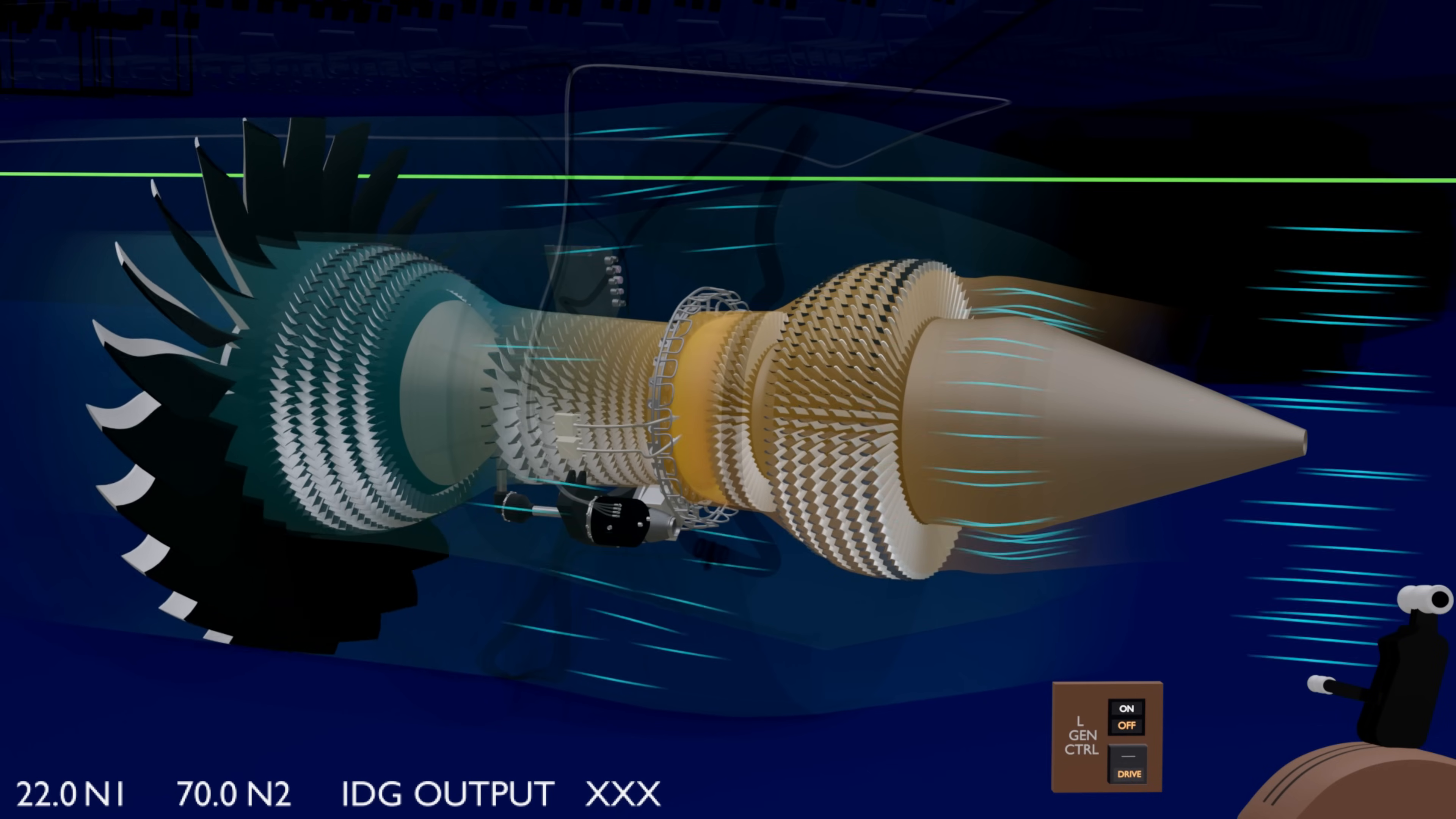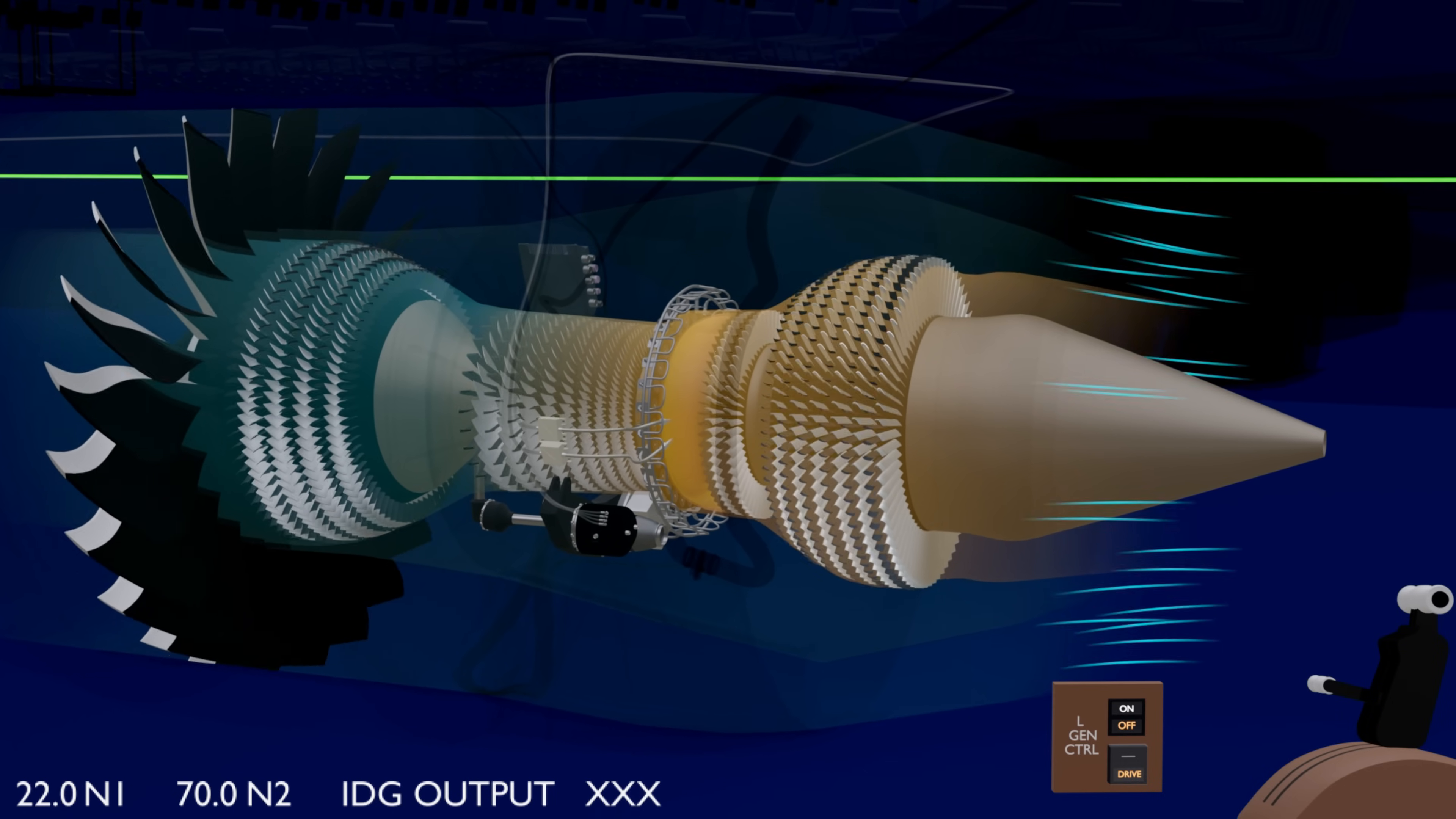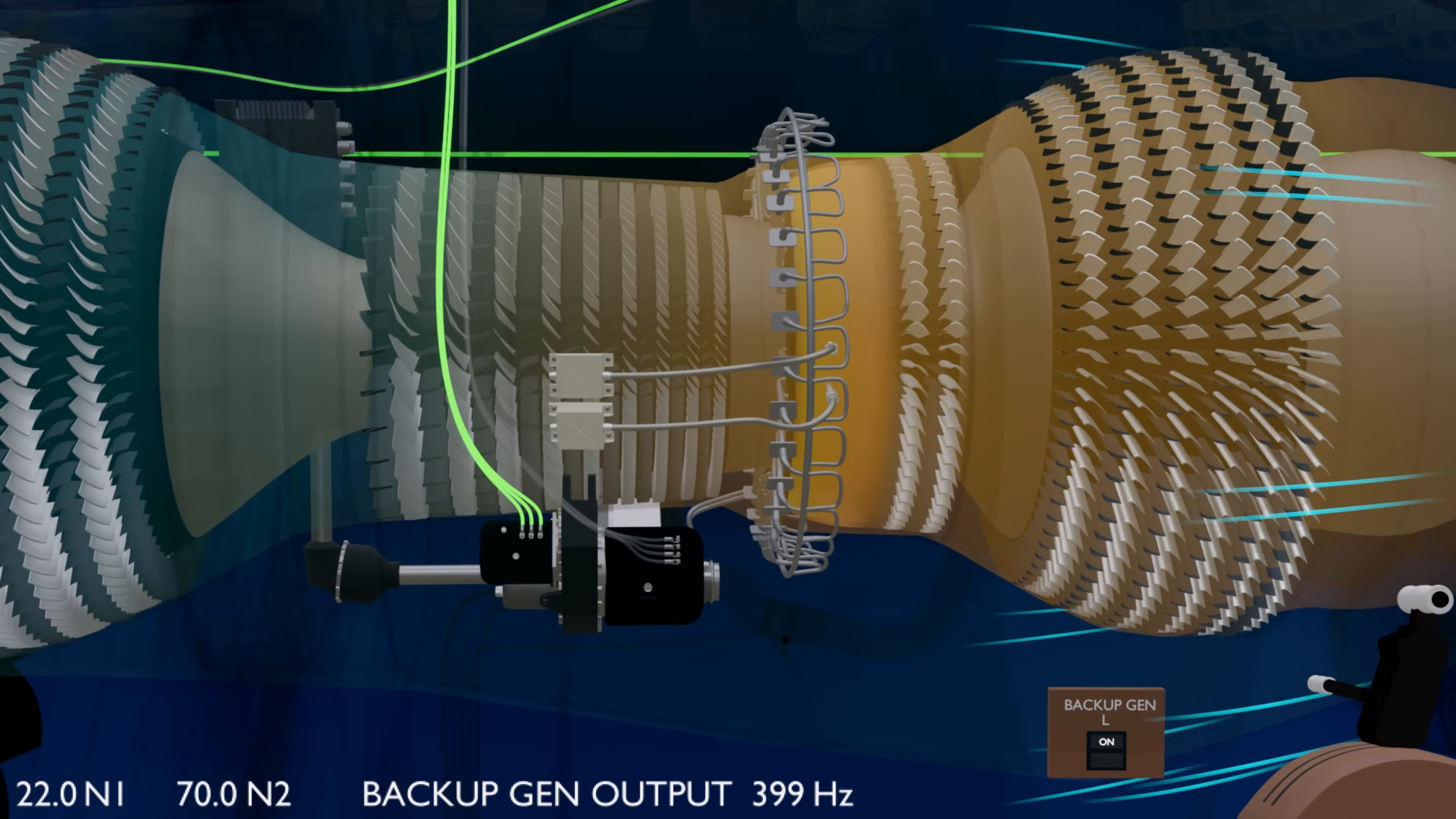Once using the disconnect switch, the IDG is not available for the remainder of the flight. On most aircraft this means total loss of electrical power from that engine, but not on the GE90, which has a backup generator.